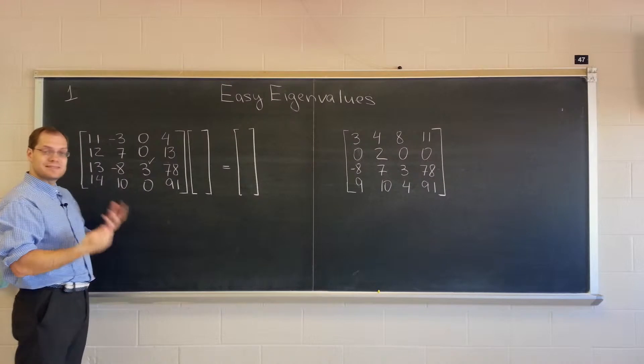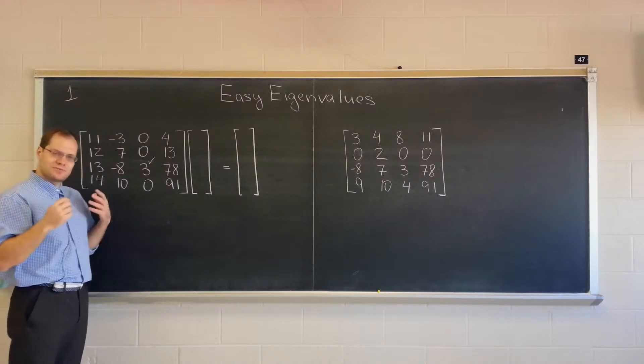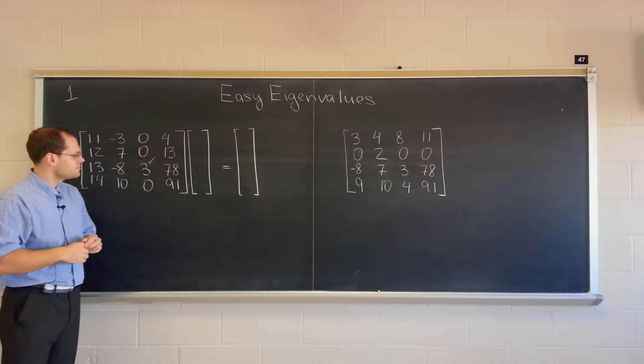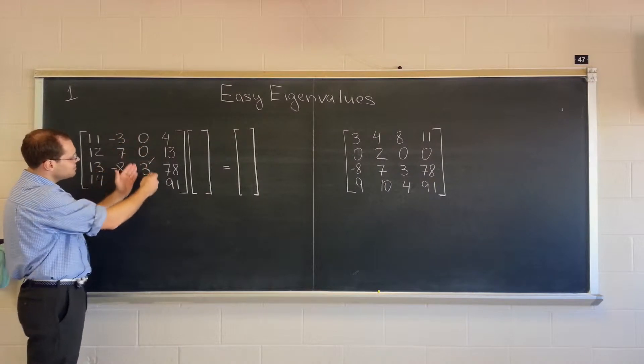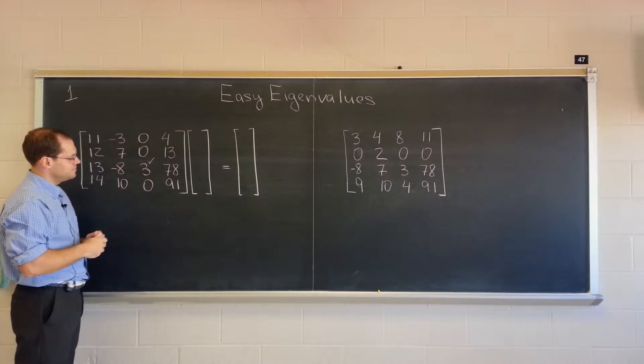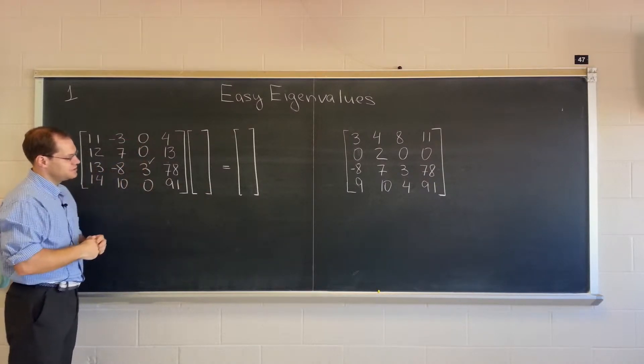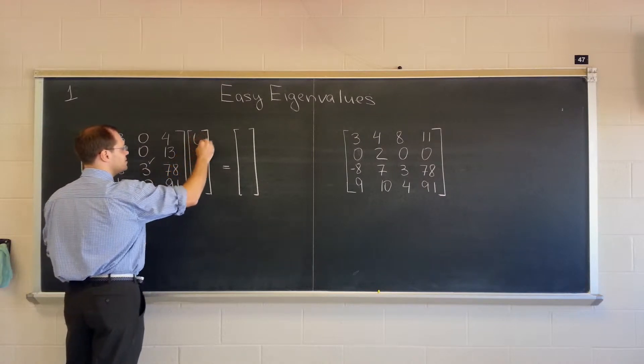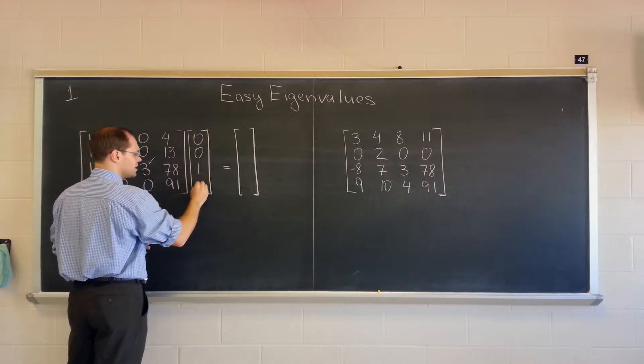And to see that it's an eigenvalue, you have to really see the eigenvector. And the eigenvector is something that will extract this column, really take advantage of that feature. That vector is zero, zero, one, zero.